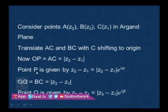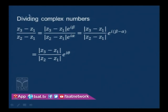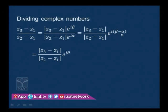We now have two complex numbers: one associated with P is z2 minus z1, and the other associated with Q is z3 minus z1. Dividing these two complex numbers, we get: (z3 minus z1)/(z2 minus z1) equals modulus of z3 minus z1 times e^(iβ) divided by modulus of z2 minus z1 times e^(iα). Simplifying, e^(iβ)/e^(iα) equals e^(i(β−α)). From the diagram, beta minus alpha equals theta, so this equals e^(iθ). The result is: (z3 minus z1)/(z2 minus z1) equals [|z3−z1|/|z2−z1|] · e^(iθ).